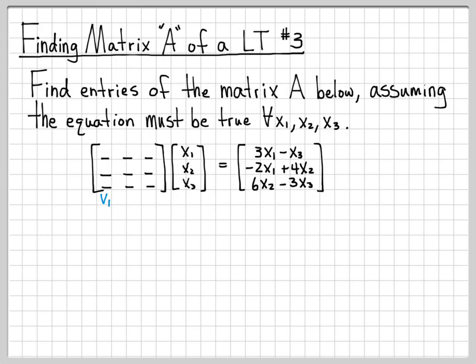So the way I'm going to think about this is I'm going to think of this first column as v1, the second column as v2, and the third column as v3. When written that way, we know how to do matrix vector multiplication. Each element of the vector x weights the corresponding column of the matrix A. So I can actually write out what this product is equal to. It's x1 times the vector v1 plus x2 times the vector v2 plus x3 times the vector v3, and we need that to equal the quantity that we were given.